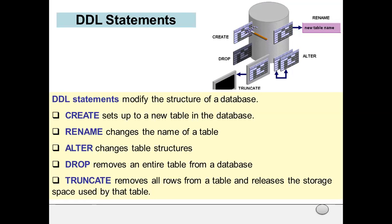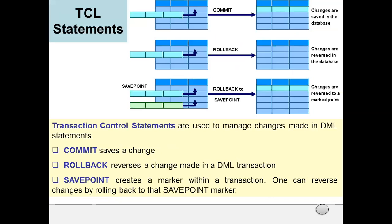Next is Transaction Control Language or TCL statements. Transaction control statements are used to manage changes made in DML statements. First is COMMIT, which saves a change. ROLLBACK reverses a change made in a DML transaction. Suppose we have made a change using a DML transaction, but if you want to reverse that change, we use the ROLLBACK command. SAVEPOINT creates a marker within a transaction—it works as a breakpoint. You can reverse changes by rolling back to that SAVEPOINT marker.